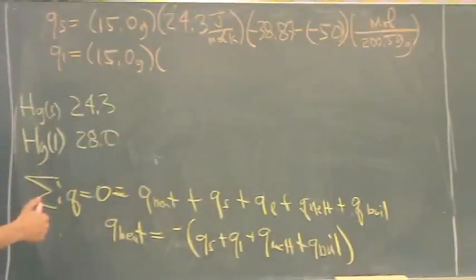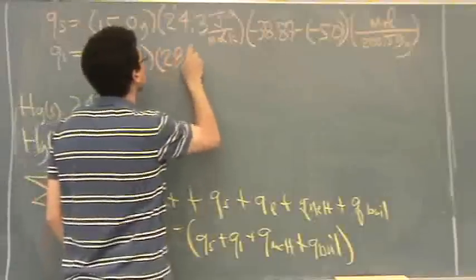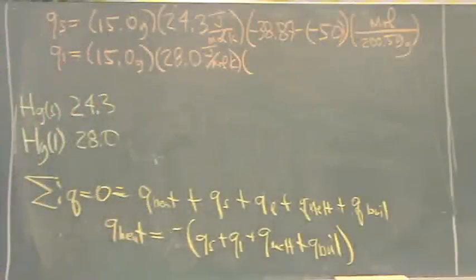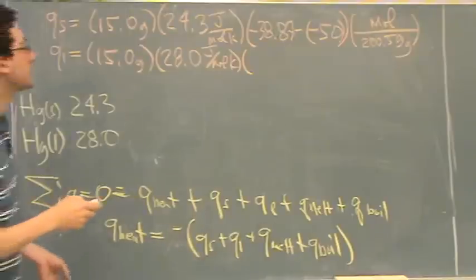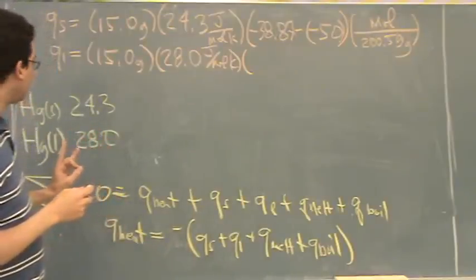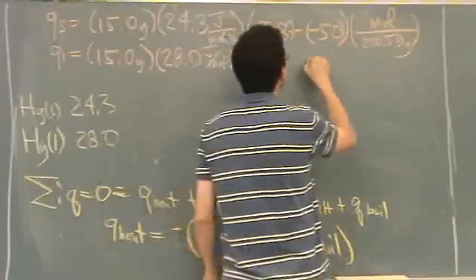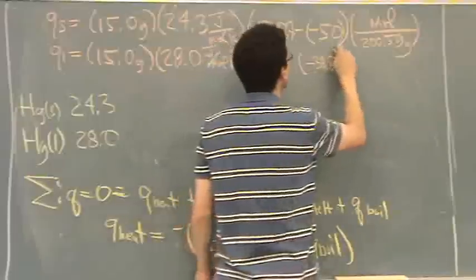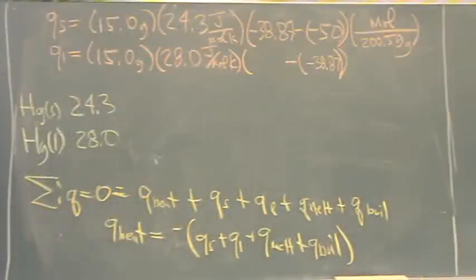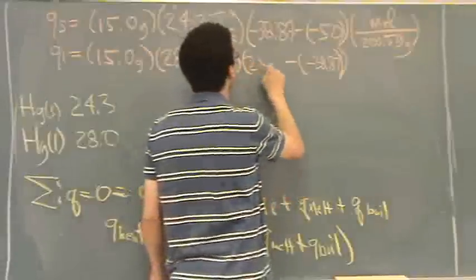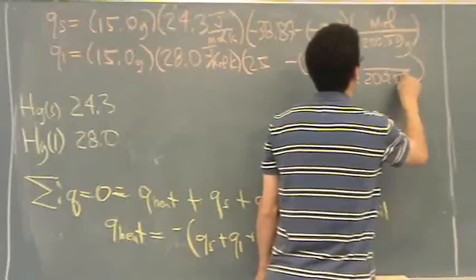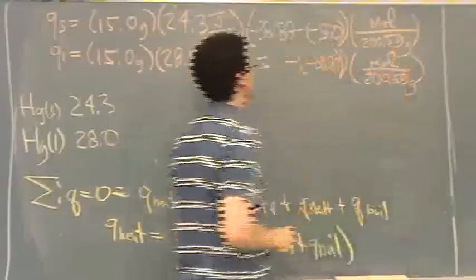Alright, so now I'm doing the liquid. So I take notice of the other heat capacity, the 28.0 joules per mole Kelvin. So that's different. And the temperature change will also be different. So I'm going to take a temperature change that goes from the melting point, minus 38.87. That's the initial. What's the final? 25. 25, all the way up to the boiling point. And then I still have the molar mass conversion. Like that.